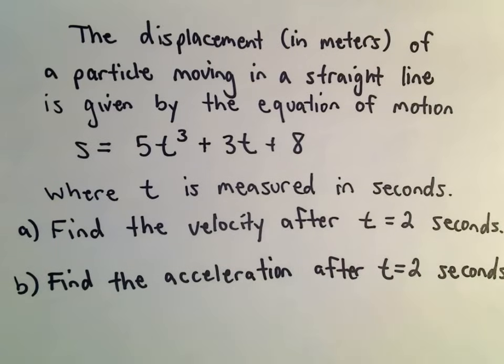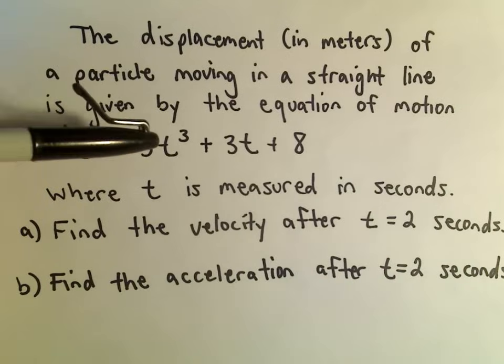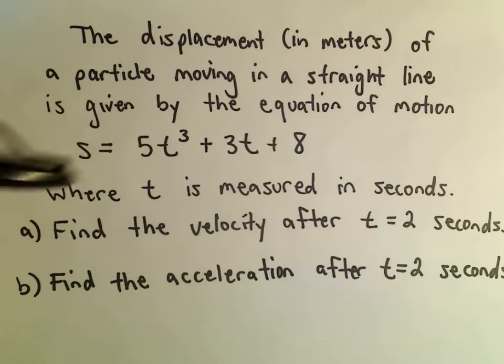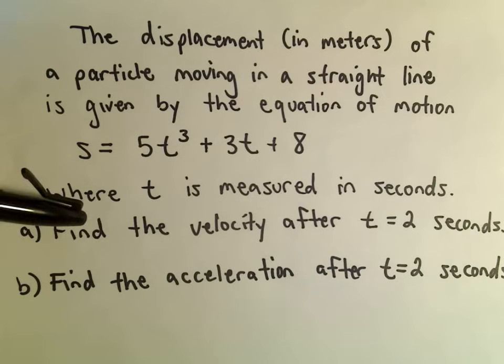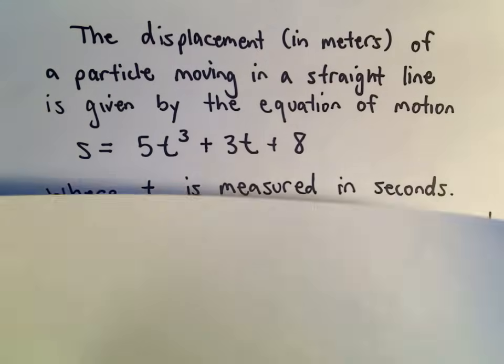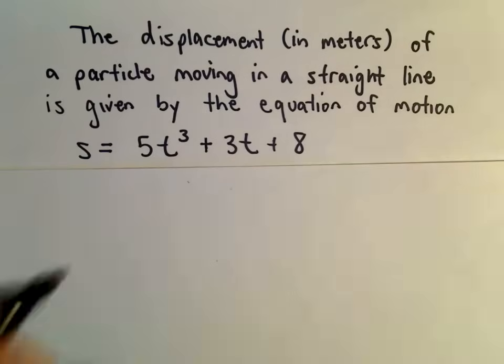The displacement in meters of a particle moving in a straight line is given by the equation of motion, S equals 5T cubed plus 3T plus 8, where T is measured in seconds. We want to find the velocity after 2 seconds, and then the acceleration after 2 seconds as well. So, all we have to do is just take some derivatives.